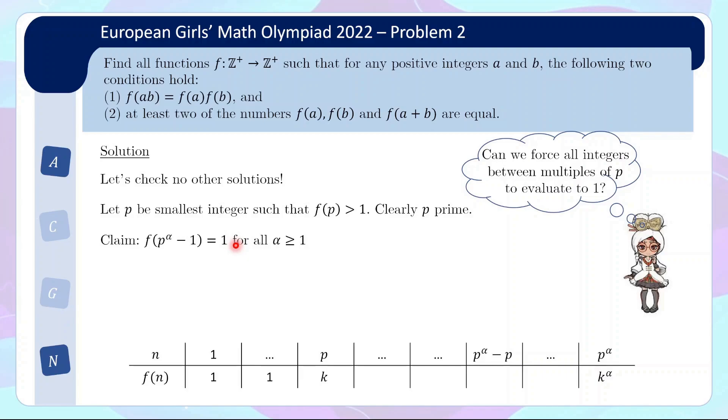And actually, the proof for this is very similar to our important example. Namely, I'm going to look at the multiple of p just before that, which will be p to the alpha minus p. I'm going to figure out what this entry is, and then I'm going to force the number in between to evaluate to 1. So how are we going to do this formally? Well, firstly, I mean this smells like induction. So let's use induction.